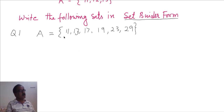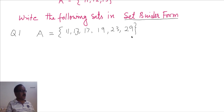See — 11 is a prime number, 13 is a prime number, 17 is a prime number. Similarly, 19, 23, and 29 are all prime numbers.